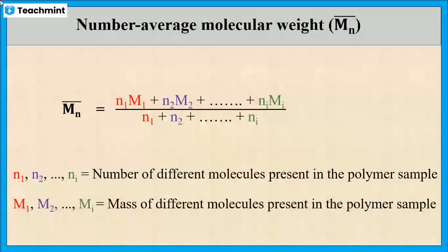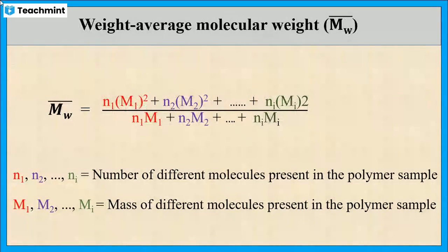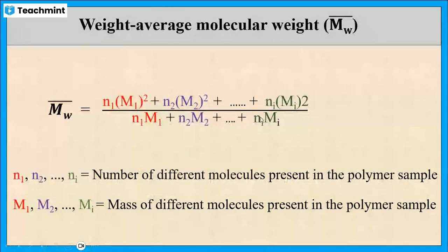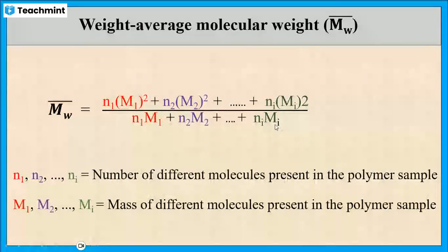Next, the weight average molecular weight is given by Mw bar is equal to N1·M1² plus N2·M2² plus so on plus Ni·Mi², whole divided by N1·M1 plus N2·M2 plus so on plus Ni·Mi.